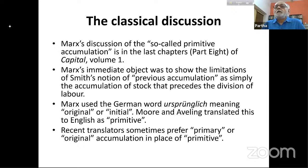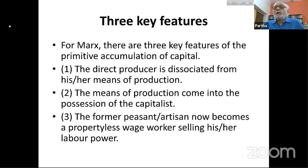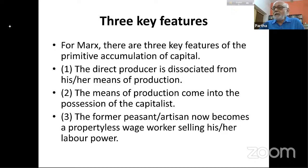This is Marx's crucial argument: three key conditions are necessary. First, the direct producer must be dissociated from his or her means of production. Second, the means of production must come into the possession of the capitalist — if it is land, the land comes to the capitalist. Finally, the former peasant or artisan now becomes a propertyless wage worker selling his or her labor power.